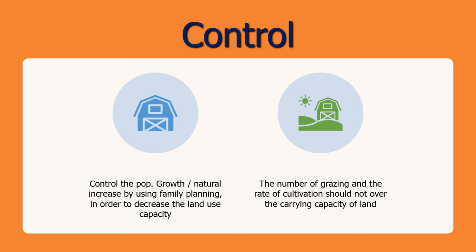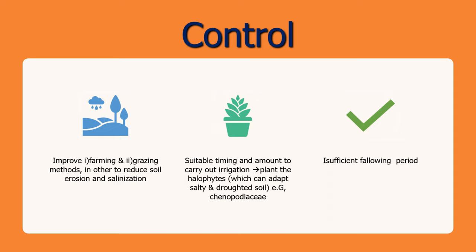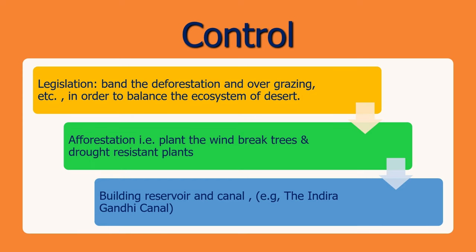How can we control desertification? First, control population growth through family planning to decrease land use pressure. Second, grazing and cultivation rates should not exceed the carrying capacity of the land. Third, improve farming and grazing methods to reduce soil erosion and salination. Fourth, apply suitable timing and amounts of irrigation. Fifth, plant halophytes that can adapt to salty and drought-prone soils, and ensure sufficient fallow periods. Legislation can also help — ban deforestation and overgrazing to balance the desert ecosystem.